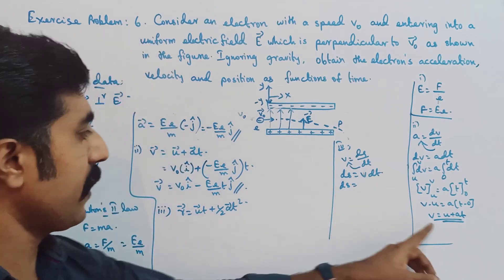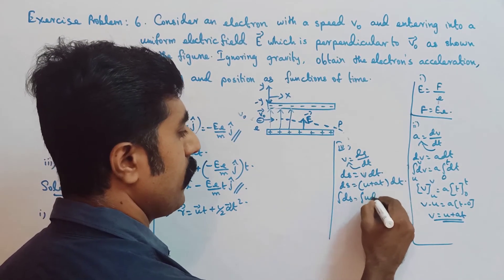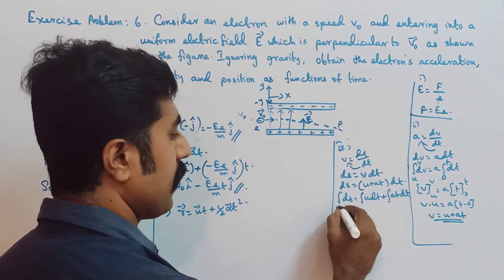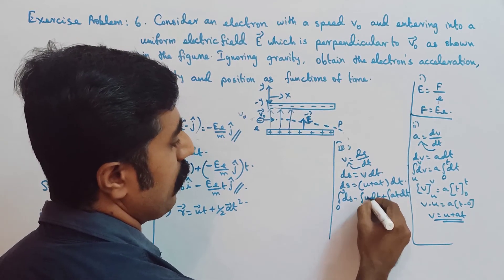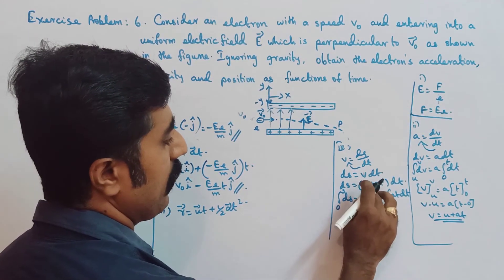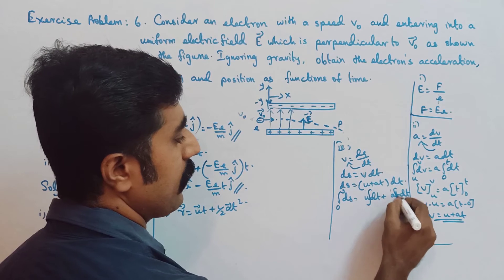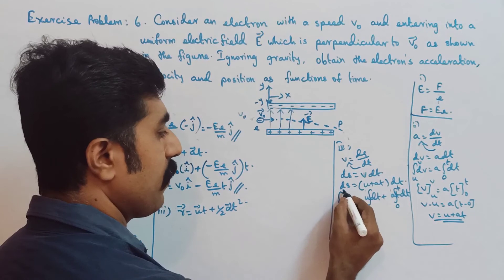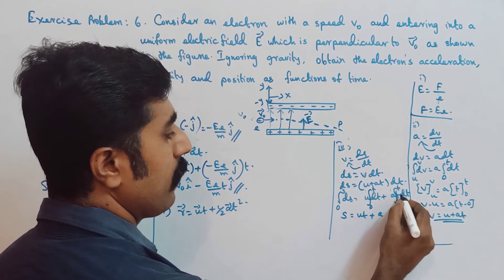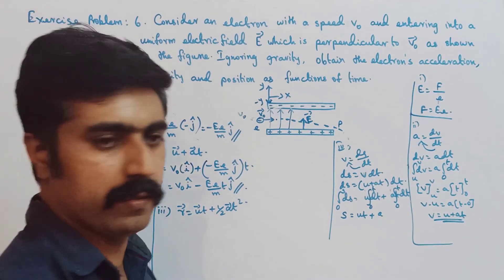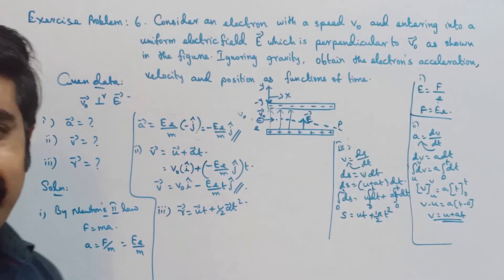Integrating both sides: integral ds from 0 to S equals integral (u + at) dt from 0 to t. Splitting: integral u·dt plus integral at·dt. This gives S = ut + a·(t²/2), that is S = ut + ½at². So the second equation of motion is derived. The equations of motion are derived from first principles.